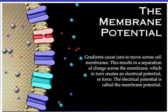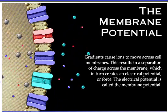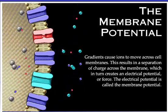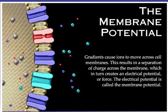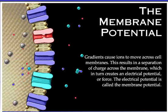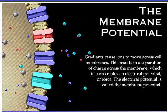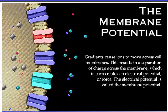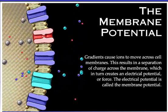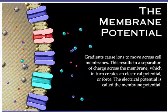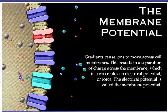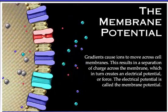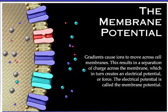Gradients cause ions to move across cell membranes. This results in a separation of charge across the membrane, which in turn creates an electrical potential, or force. The electrical potential is called the membrane potential.